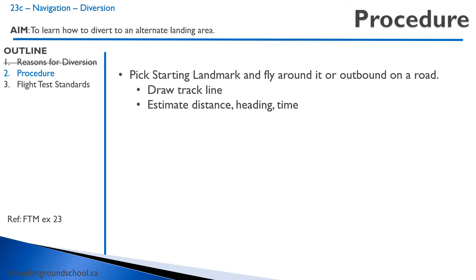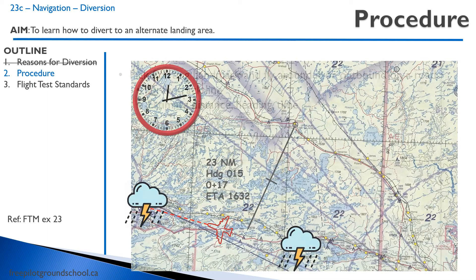From where we started to where we're going, we're going to estimate the distance, heading, and time. The way we estimate distance is by looking at your lines of latitude — remember, each minute of latitude is one nautical mile. So we can use a pencil or something like that held on our map to figure out how many nautical miles it is, and then estimate a heading as well. You draw a line on the map, hold that pencil against that line, then hold it against your line of latitude or count the little ticks — each one is a nautical mile — and figure out our heading, distance, and time en route.